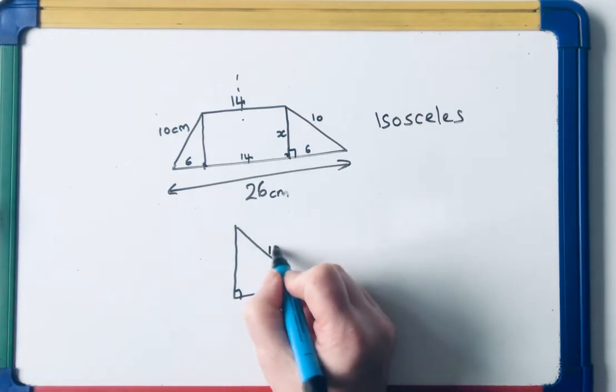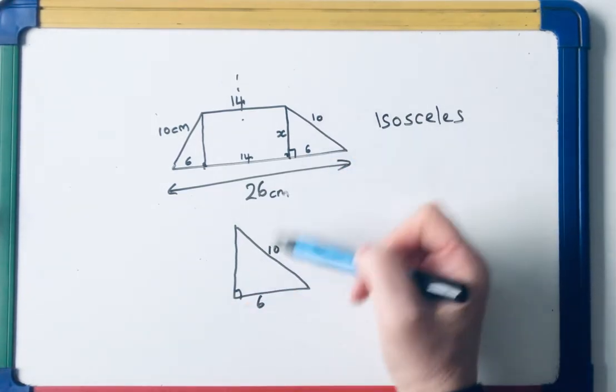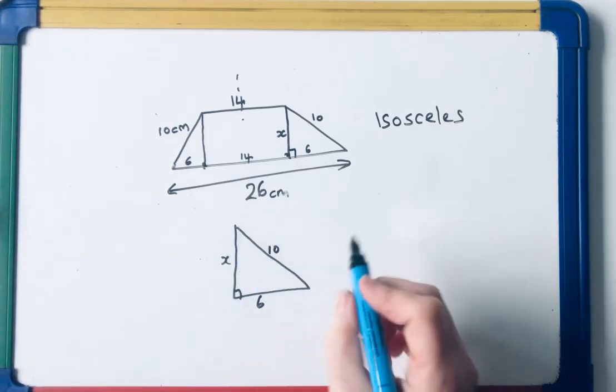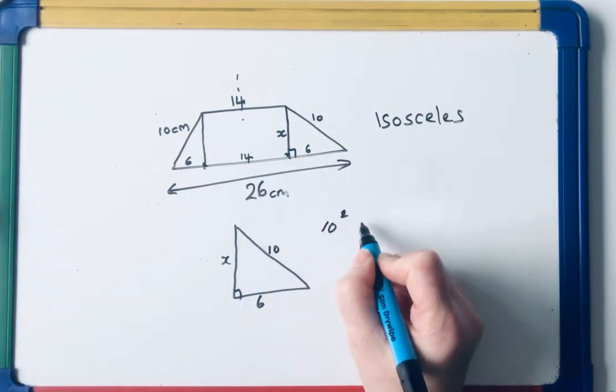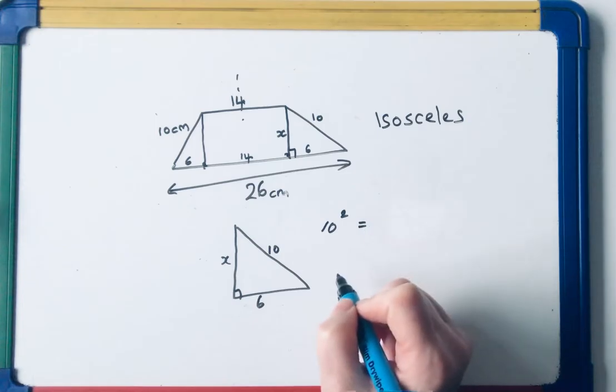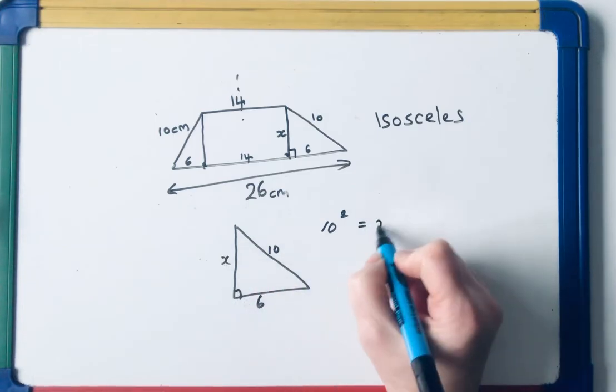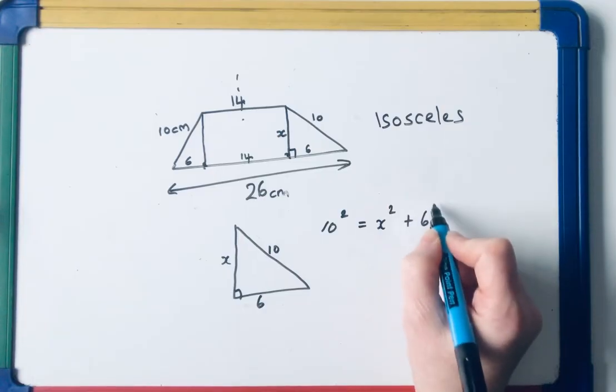I know that that's 6, and I know that that's 10. I've just put that there, and that there. Well, I'm finding the shorter side, because that's the hypotenuse. So 10 squared is equal to the sum of these, x squared plus 6 squared.